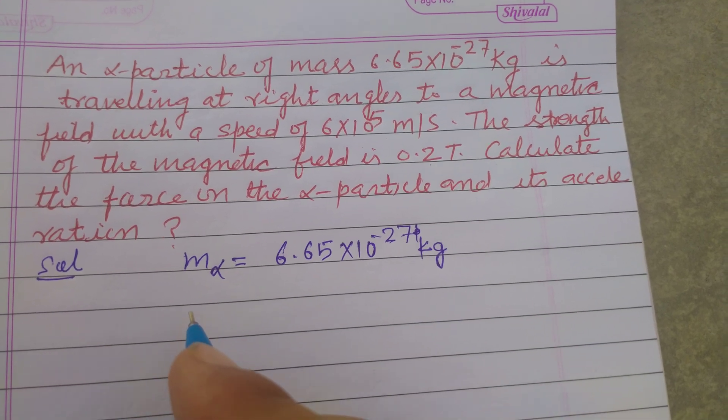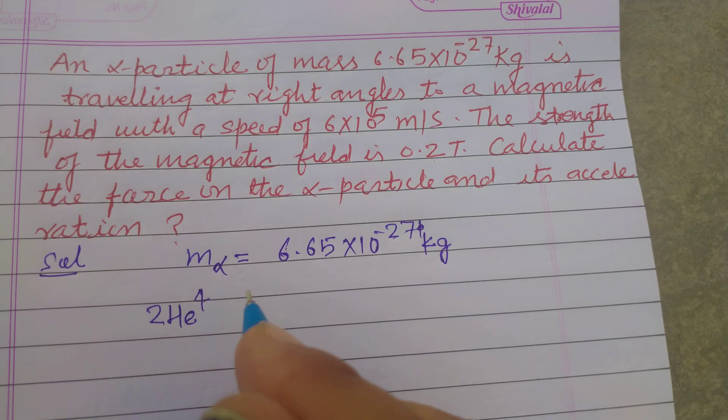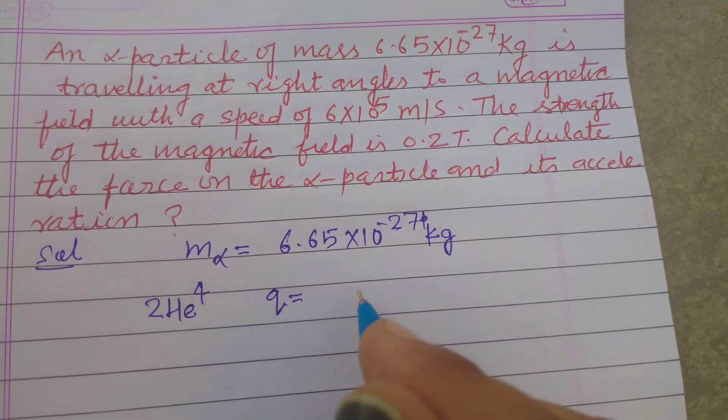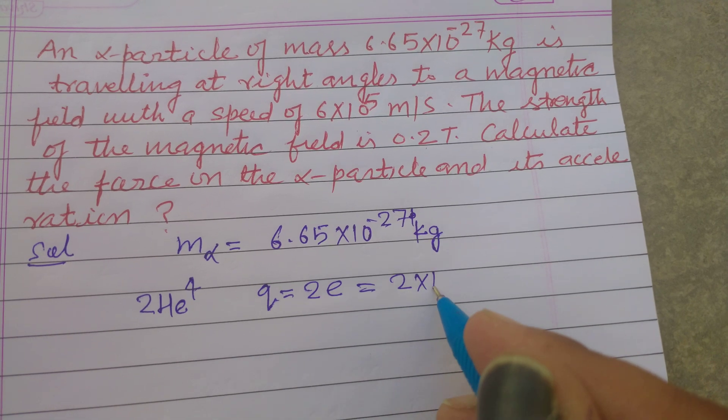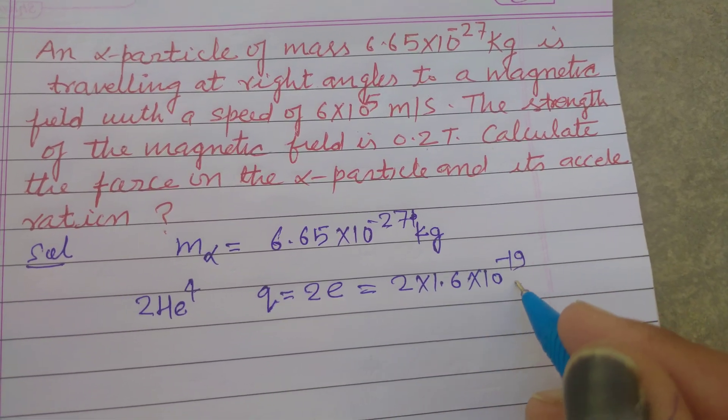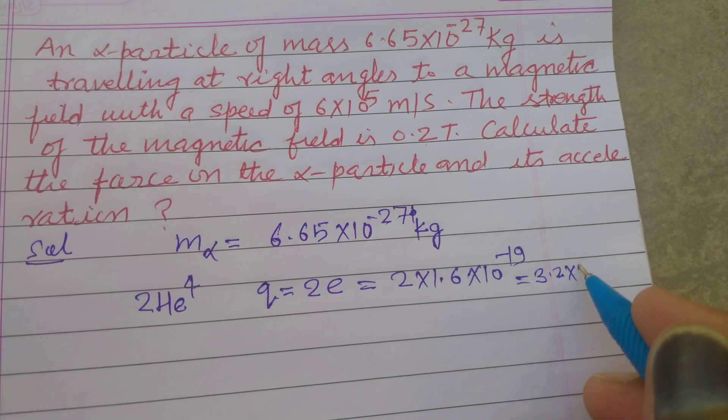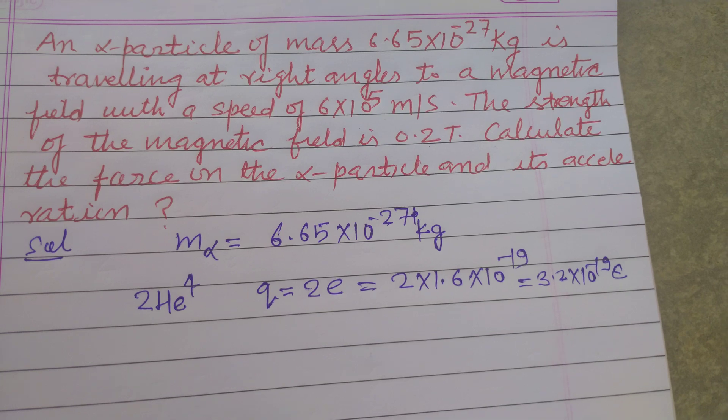And you know that the charge on an alpha particle, which is helium-4, is q = 2e. So 2 × 1.6 × 10^-19 coulombs, or 3.2 × 10^-19 coulombs, is the charge on the alpha particle.